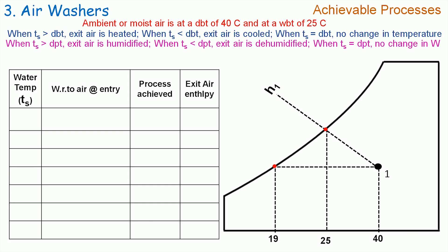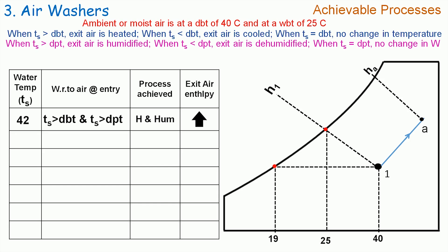Let us start with TS equal to 42°C. With reference to moisture properties, TS is greater than dry bulb temperature, hence air is heated. And TS is greater than dew point temperature, hence air is humidified. Therefore, the achievable process by the air washer is heating and humidification. If we plot it on the psychrometric chart, then process 1A will be representing it. The enthalpy HA is greater than H1, hence the exit air enthalpy increases.